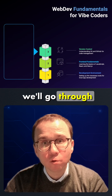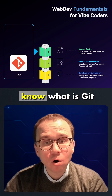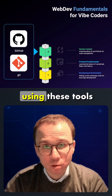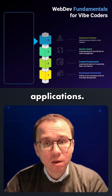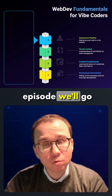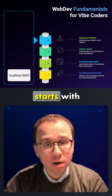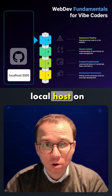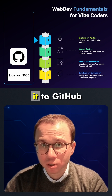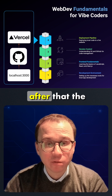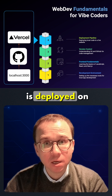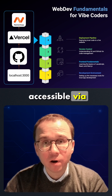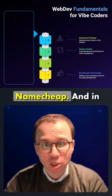In the third episode, we will go through version control — you will learn what Git and GitHub are and how modern programmers use these tools to develop applications. In the fourth episode, we will go through the deployment pipeline, which starts with developing the application locally on your machine, then pushing it to GitHub, after which the web application is deployed on Vercel and accessible via a domain name, which we will purchase with Namecheap.